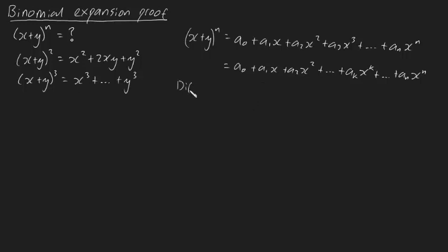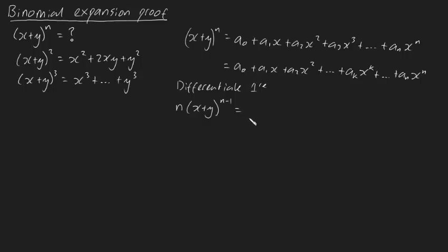Let's consider what happens if I differentiate both sides of the equation once — taking d/dx on both sides. The left hand side gives us n times x plus y to the n minus one, times the derivative inside which is just one, since x is a variable and y is a constant. On the right hand side, a0 is a constant so it turns into zero, a1x becomes a1, a2x squared becomes 2a2x, and continuing on, the a_k x^k term becomes k times a_k x to the k minus one, all the way to n times a_n x to the n minus one.